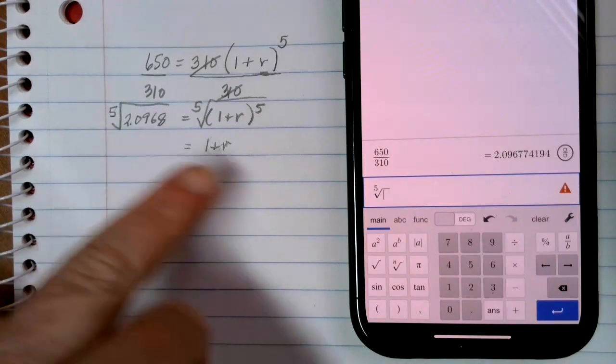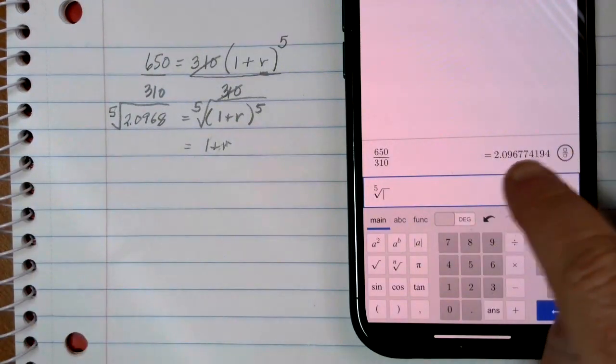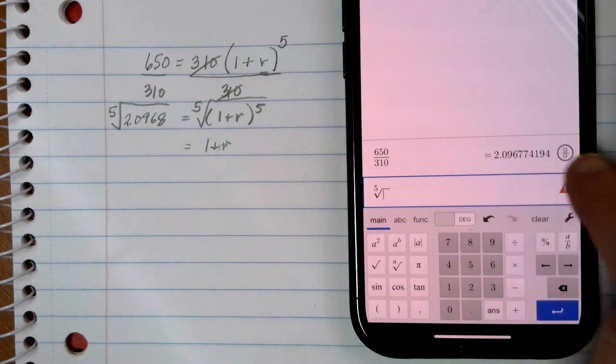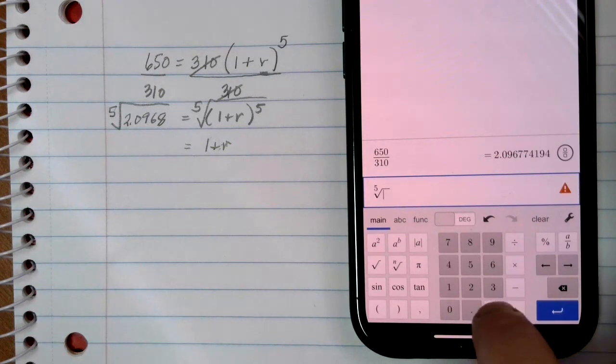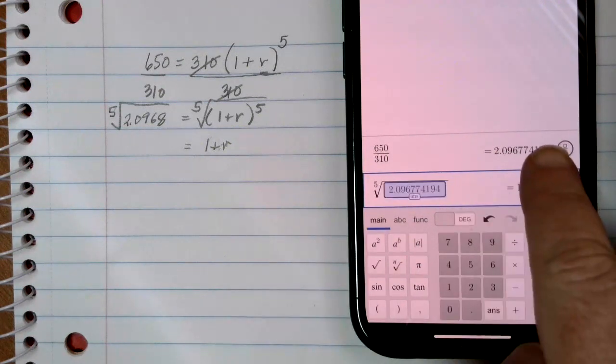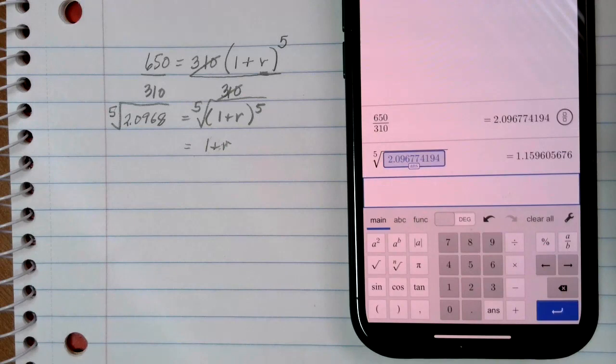Now, if you notice, the previous answer that I had was this 2.0968, but with lots and lots of decimals. So you can use this ANS button. It's going to copy over whatever the last answer is, put it inside that 5th root for you, and keep all of those decimals. So it's really going to increase the accuracy of your answer by using that last answer button.